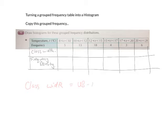OK, I want you to write down class width equals upper bound minus lower bound. So what we're doing here, we're taking the upper bound of T and the lower bound of T and subtracting them to get the numbers in the table. 12 minus 10 is 2. 15 minus 12 is 3 and so on.